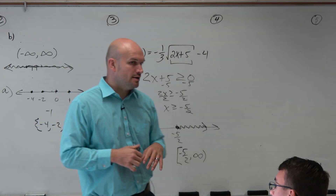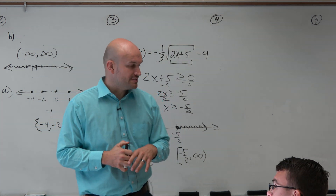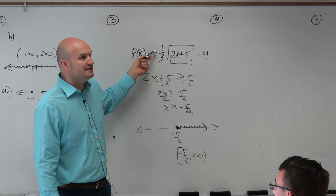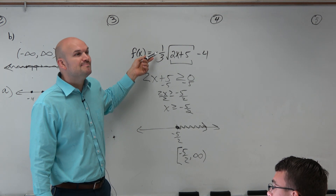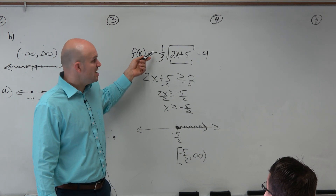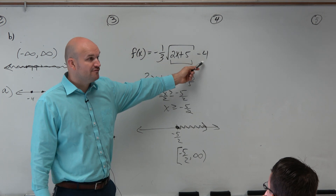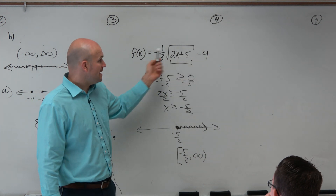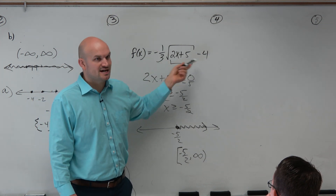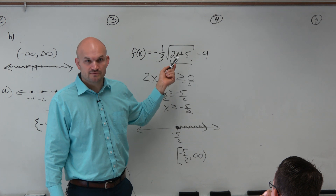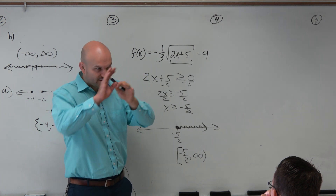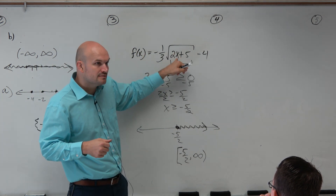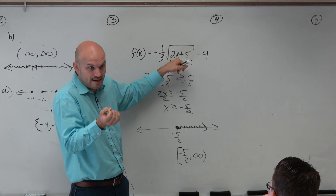The one thing I want you guys to be aware of: did the negative one-third have anything to do with the domain? Did it impact the domain? No. Did the negative 4 impact the domain at all? No. So I could put some really crazy stuff on the outside of that square root to try to confuse you, and you could just look past it and zero in on the radicand, because that's what's going to impact the domain.